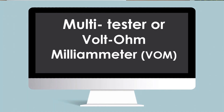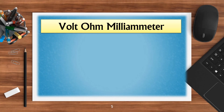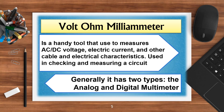Multitester or Volt Ohm Milliameter (VOM). The Volt Ohm Milliameter is a handy tool used to measure AC and DC voltage, electric current, and other cable and electrical characteristics used in checking and measuring a circuit. Generally, it has two types: the analog and digital multimeter.